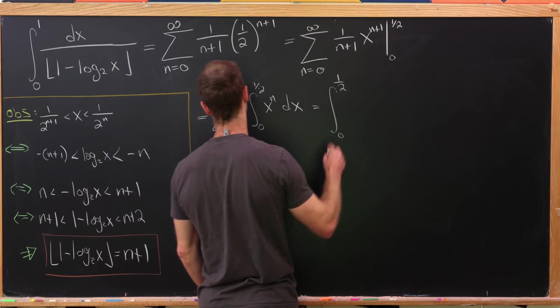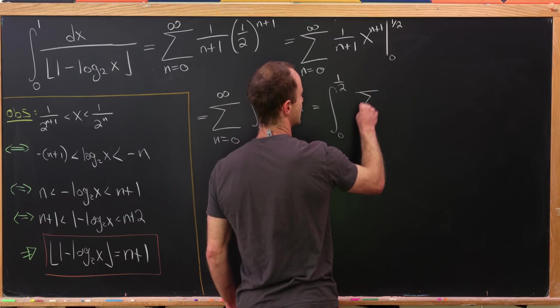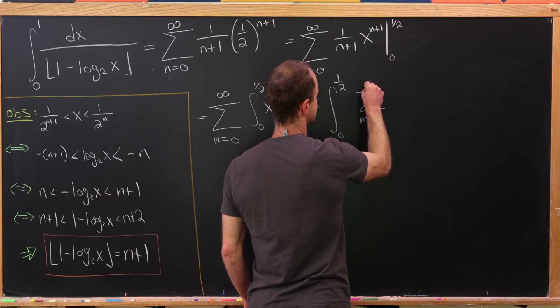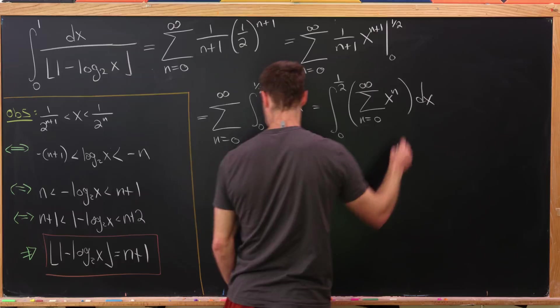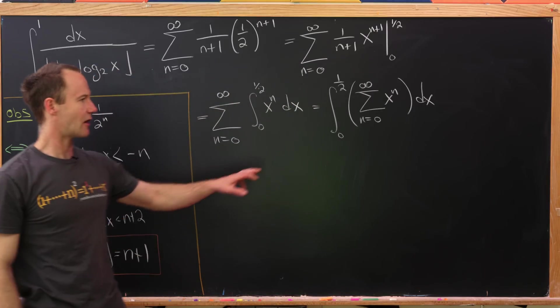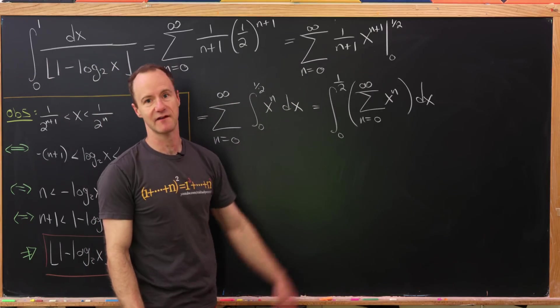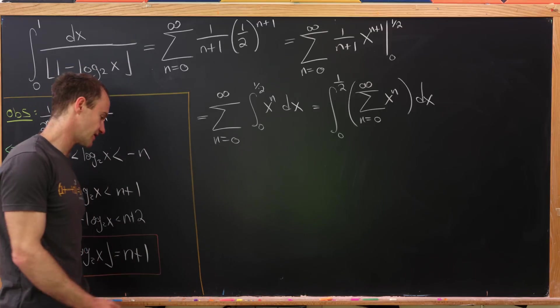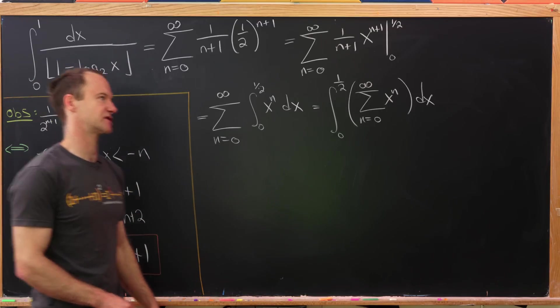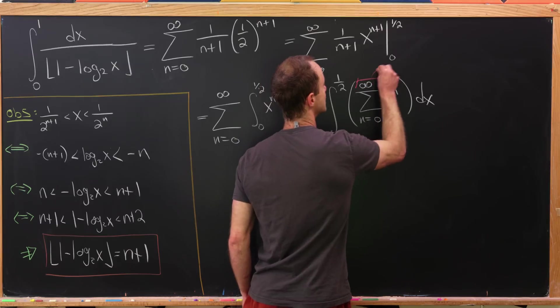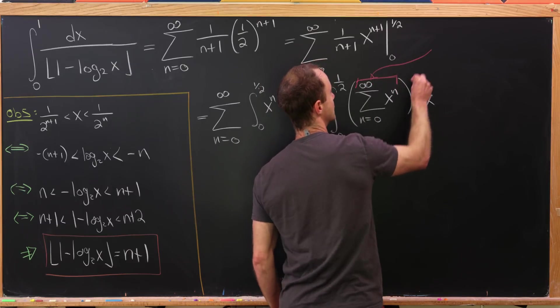to give us the integral from 0 to 1 half of the sum as n goes from 0 up to infinity of x to the n dx. But check it out, if x is between 0 and 1 half, this is simply a geometric series where we are within the interval of convergence for a geometric series. So that's nice. And so we'll take the well-known value of